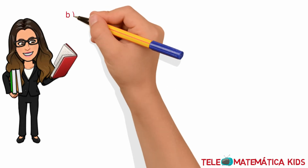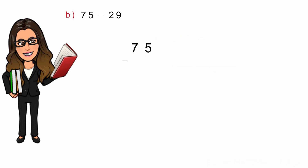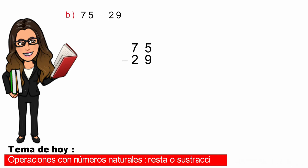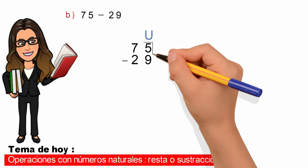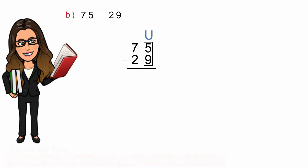Literal B: 75 menos 29. En primer lugar, escribimos los números verticalmente teniendo en cuenta que el minuendo se coloca encima y el sustraendo debajo. En segundo lugar, identificar la columna de las unidades y restar. Pero en este caso, como no podemos restarle 9 al 5, le pedimos una prestada a la decena: el 5 se transforma en 15 y el 7 se transforma en 6. Luego restamos.